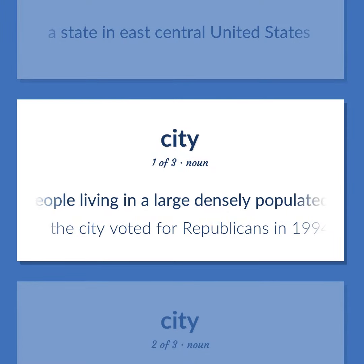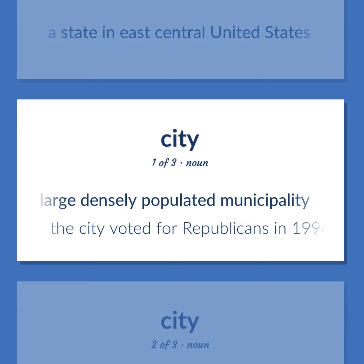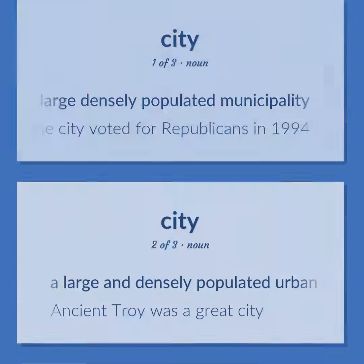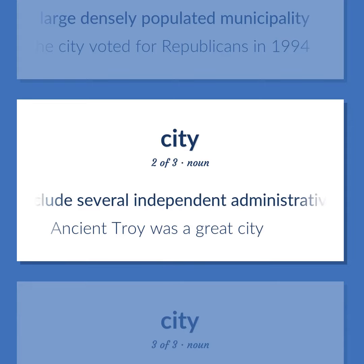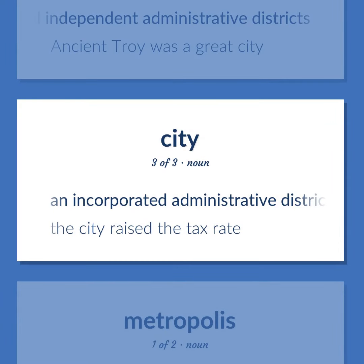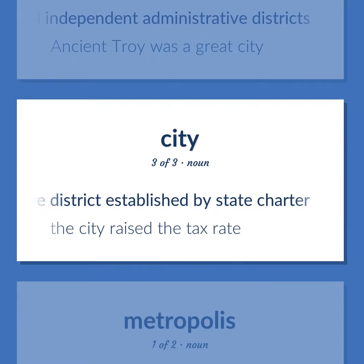People living in a large densely populated municipality. The city voted for Republicans in 1994. A large and densely populated urban area; may include several independent administrative districts. Ancient Troy was a great city. An incorporated administrative district established by state charter. The city raised the tax rate.